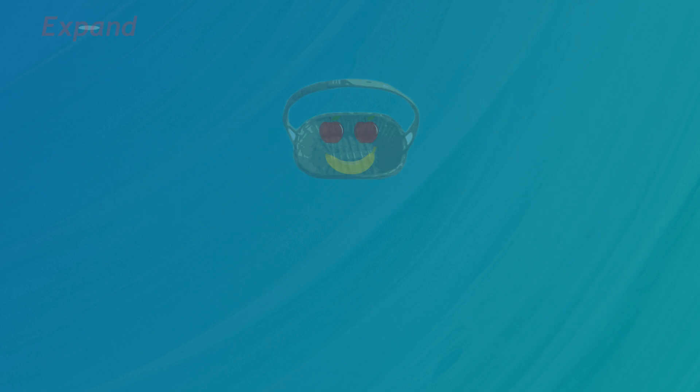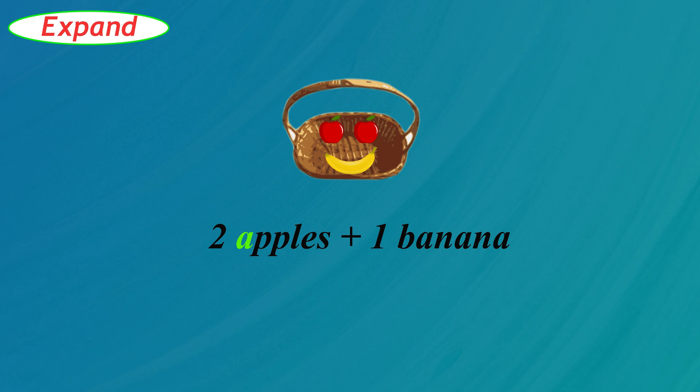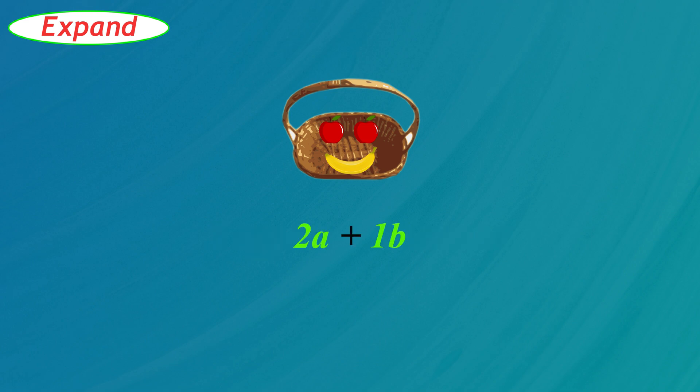First we will learn how to expand expressions. Here is a basket with two apples and one banana. Let's write that in algebra. We write A for apple and B for banana, so two apples and one banana is 2A plus 1B.